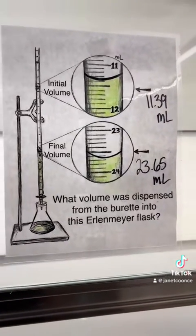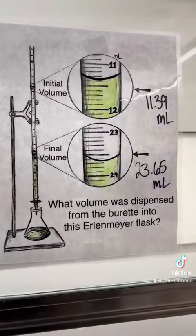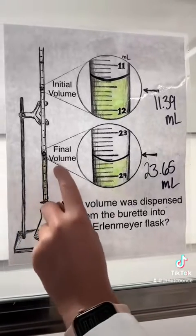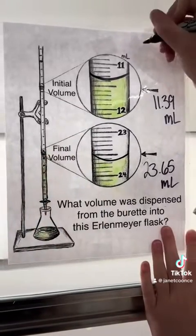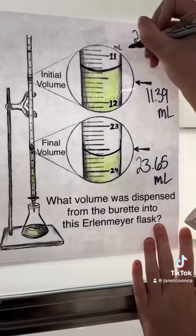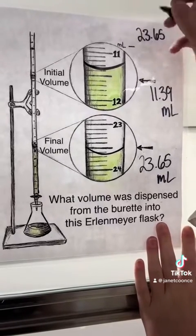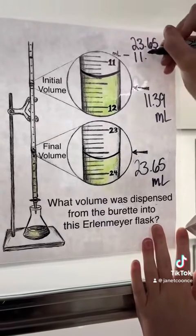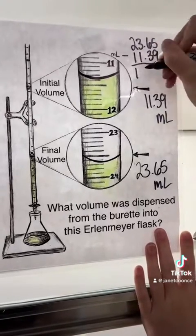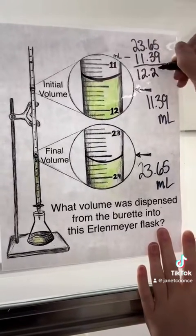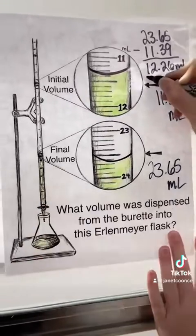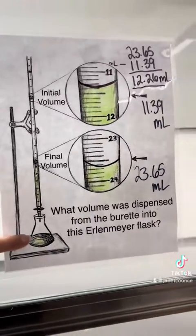So now what we're going to do is find out how much of the liquid was actually dispensed. What we need to do is subtract the final volume minus the initial volume. So right here we have 23.65. You might have 64 or 66 here — that last digit, that 5, was your guess, but it should be somewhere around 5. And then we're subtracting that initial volume to get the final volume that was dispensed.